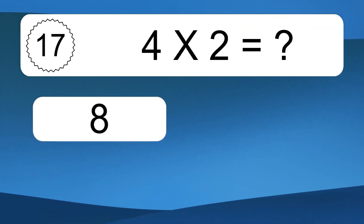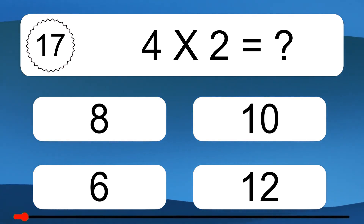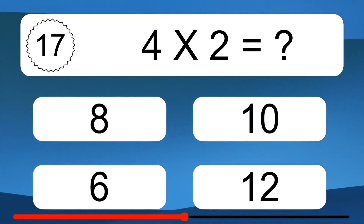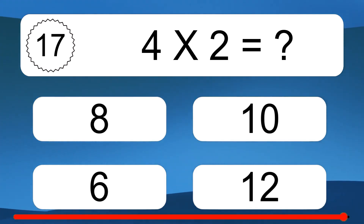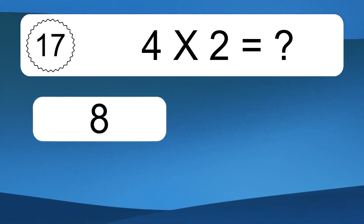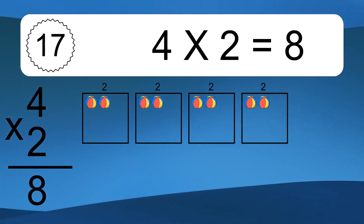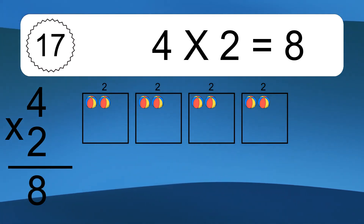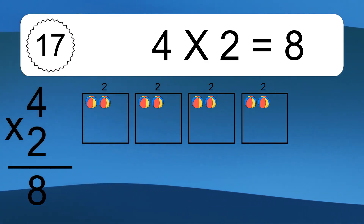4 times 2 equals 8. We have 4 boxes and each box has 2 colorful balls inside. If you count all the balls in all the boxes together, you will have 4 times 2 balls. This equals 8 balls.